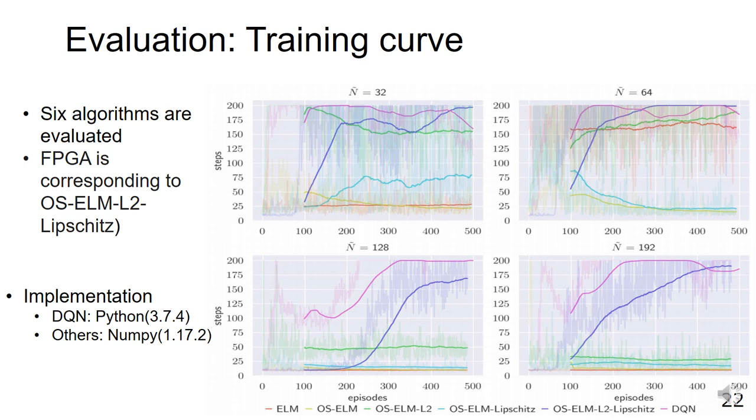OS-ELM-L2-Lipschitz, which combines spectral normalization and spectral regularization technique, performs better than methods that use spectral normalization only or spectral regularization only. This is because the two techniques work on both layer α and β.